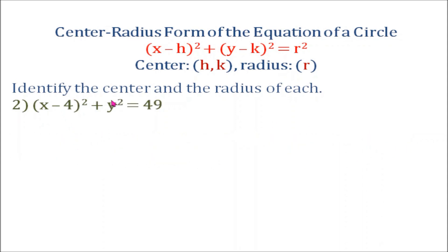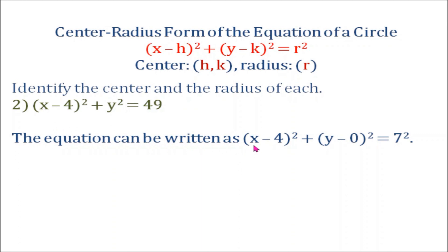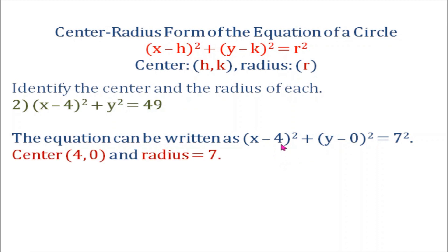Example number two: identify the center and the radius of the quantity x minus 4 squared plus y squared equals 49. This equation can be written as the quantity x minus 4 squared plus the quantity y minus 0 squared equals 7 squared, since 49 can be written as 7 squared. The coordinates of our center are h and k: 4 and 0. Notice here we have the quantity x minus 4 squared, so h is positive 4, and the radius is 7.